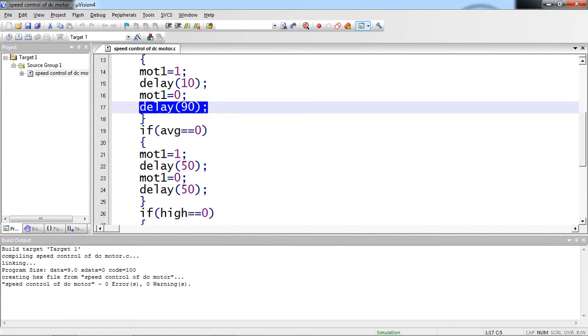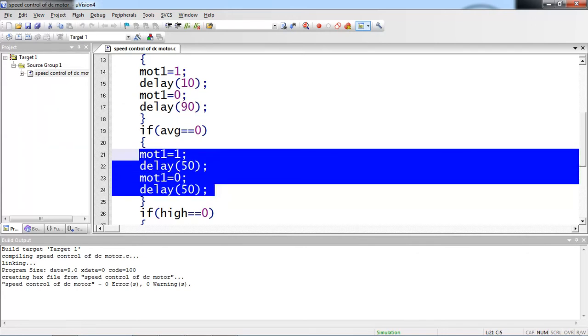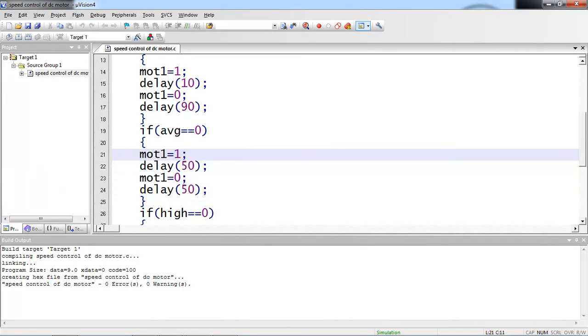The same logic, whenever you are observing for average input, average button, then logic is different than low. Here motor one, which is delay of 50, and motor zero, delay of 50. This is your 50% duty cycle for your motor.